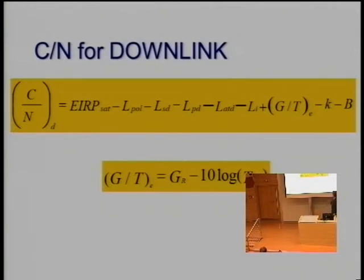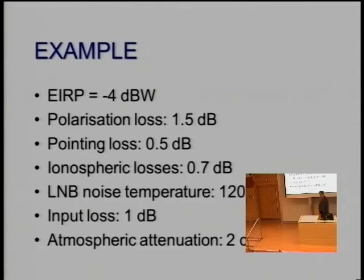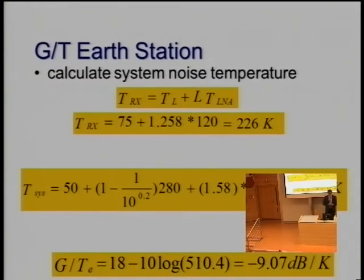Now let's go to the C over N on the downlink. We have the EIRP of the satellite minus polarization losses, free space loss on the downlink, pointing loss, atmospheric loss, ionospheric loss, plus the figure of merit of the ground station minus Boltzmann constant minus system bandwidth. Taking the figures from before: EIRP minus 4 dBW, polarization loss 1.5 dB, pointing loss 0.5 dB, ionospheric loss 0.7 dB, LNB noise temperature 120 Kelvin, 1 dB loss with filter cable, atmospheric attenuation 2 dB.